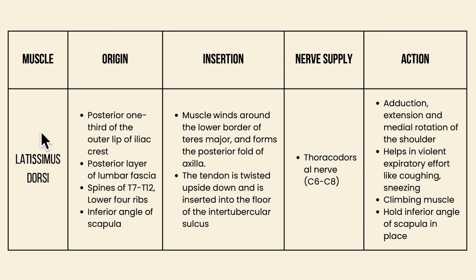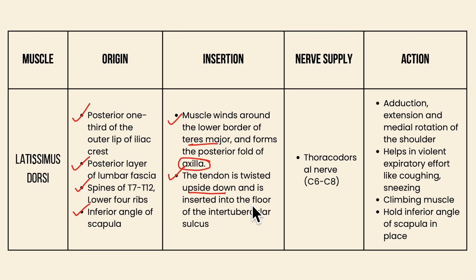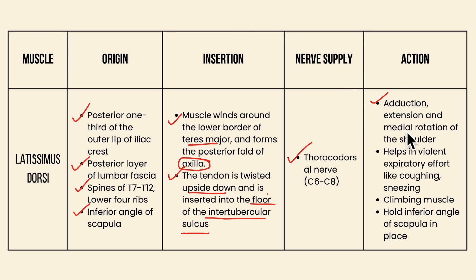To concise the points of the latissimus dorsi: it originates from the posterior one-third of the outer lip of the iliac crest, the posterior layer of the lumbar fascia, the spines of T7 to T12 and the lower four ribs, and also the inferior angle of the scapula. The muscle winds around the lower border of the teres major, forms the posterior fold of the axilla, and the tendon is twisted upside down and inserted into the floor of the intertubercular sulcus of the humerus. The nerve supply is by the thoracodorsal nerve. Actions include adduction, extension and medial rotation of the shoulder; it helps in violent expiratory effort like coughing and sneezing; it is called the climbing muscle; and it holds the inferior angle of the scapula in place.